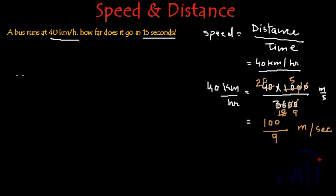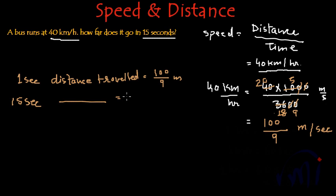So in 1 second, distance traveled is 100 by 9 meters. So in 15 seconds, distance traveled will be 100 by 9 times 15.